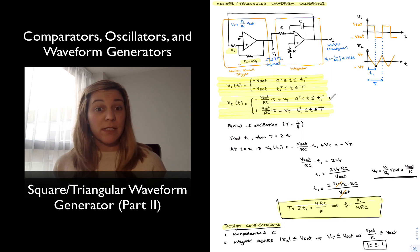Next, we're going to take a look at an example, how we will go about designing a circuit to produce a square wave or a triangular wave of a given period and a given amplitude. Thank you.